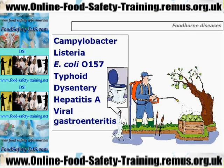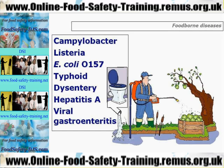It can just survive on the flesh of things like fruit, for example. An example on our slide shows how foodborne diseases come into existence: raw sewage is pumped into a water supply without any treatment, and that water supply is used to spray fruit. That fruit will then contain the bacteria present in the sewage. Examples include Campylobacter, Listeria, E. coli O157, Typhoid or Salmonella typhi, Dysentery from Shigella sonnei and Shigella flexneri, Hepatitis A and Viral gastroenteritis.